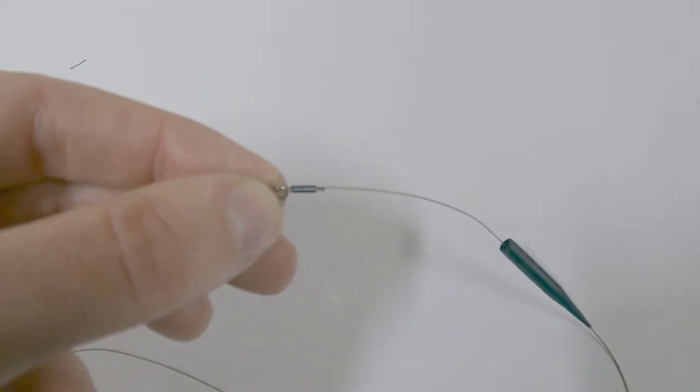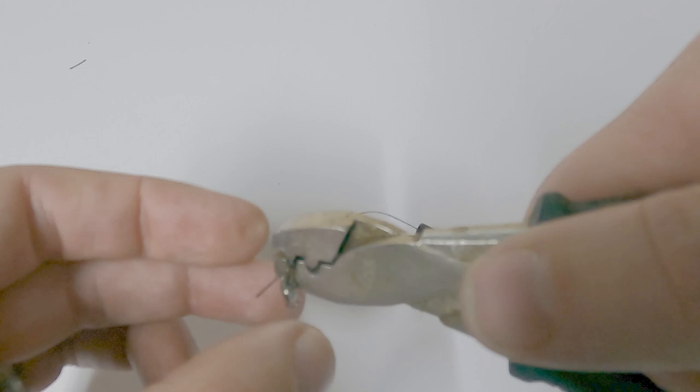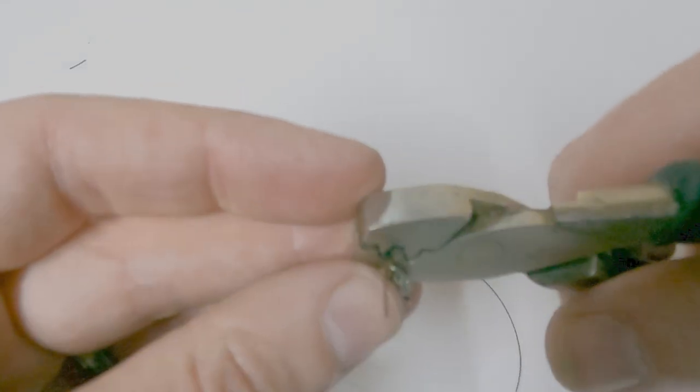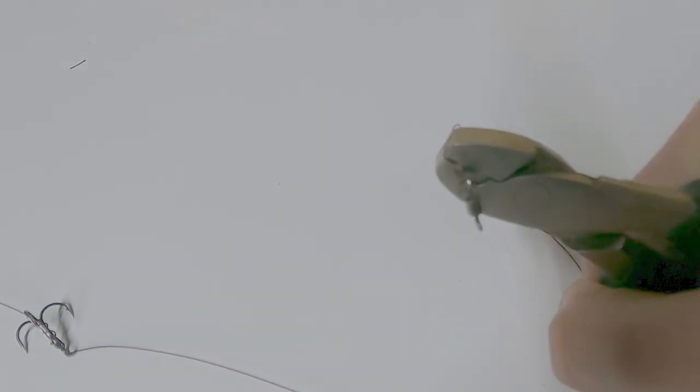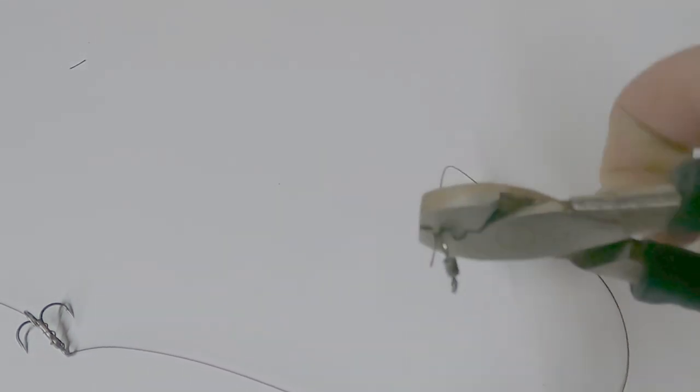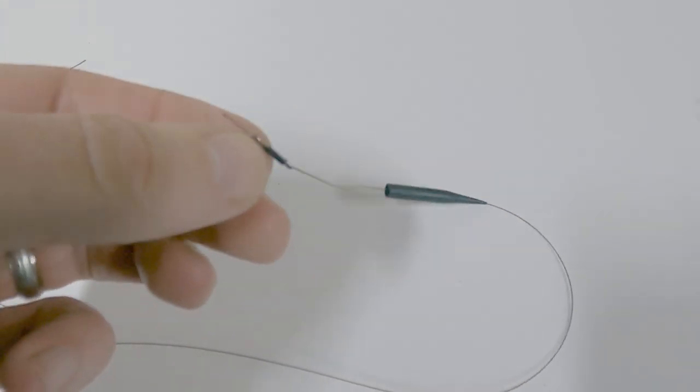That's ready to crimp into position. Exactly the same as before in the front slot on the pliers. Making sure it's central. Give it a good squeeze, two hands. I always test these. It's never let me down. This crimping is super strong.